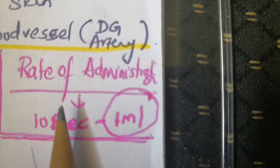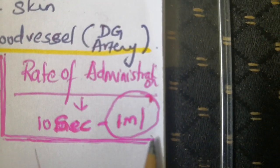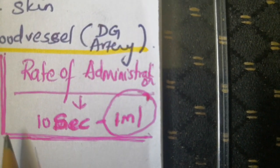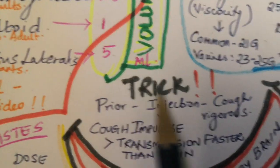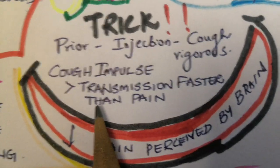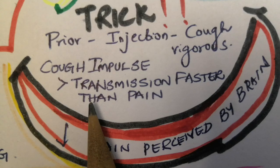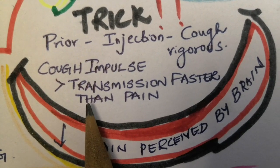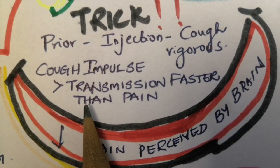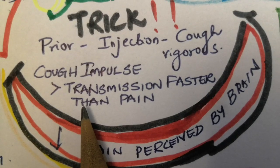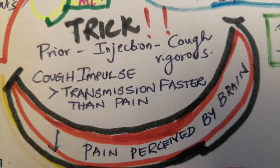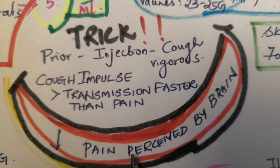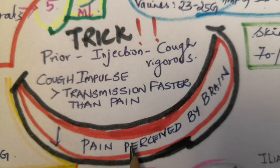The rate of administration is very important — give 1 ml per every 10 seconds slowly, as giving too fast may cause induration. A trick to reduce pain: ask the patient to cough vigorously prior to injection, because cough impulses are transmitted faster than pain impulses, so the pain perceived by the brain will be much less.